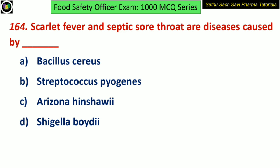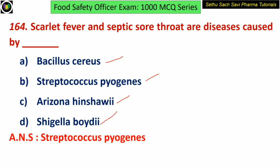Coming to the next question: scarlet fever and septic sore throat are diseases caused by — is it Bacillus cereus, Streptococcus pyogenes, Arizona hinshawi, or Shigella boydii? The answer is Streptococcus pyogenes.